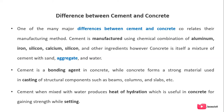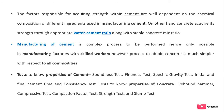Cement, when mixed with water, produces heat of hydration, which is useful in concrete for gaining strength while setting. The factors responsible for acquiring strength within cement are dependent on the chemical composition of different ingredients used in manufacturing cement. Concrete acquires resistance through the appropriate water-cement ratio along with a stable concrete mix ratio. Manufacturing of cement is a complex process, hence only possible in factories with skilled workers, whereas the process to obtain concrete is much simpler.